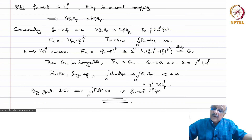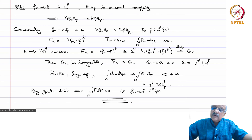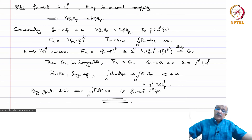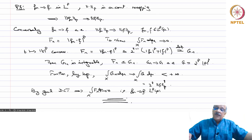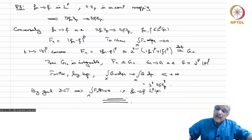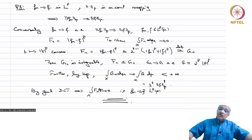We have shown that LP is a Banach space and discussed convergence in LP. Next time we will take up other special properties of LP spaces like density, separability, and such topological properties.